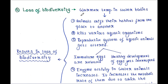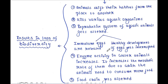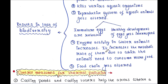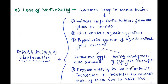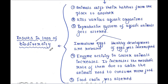Loss of biodiversity is another effect. Warmer temperatures in water bodies cause various effects: animals shift their habitat from one place to another, warmer temperatures kill various aquatic organisms, the reproductive systems of aquatic animals get altered — immature eggs are released and healthy development of eggs is affected. Enzyme activity in water animals increases, raising their metabolic rate so they need to consume more food. The food chain gets altered, and all of these result in loss of biodiversity.